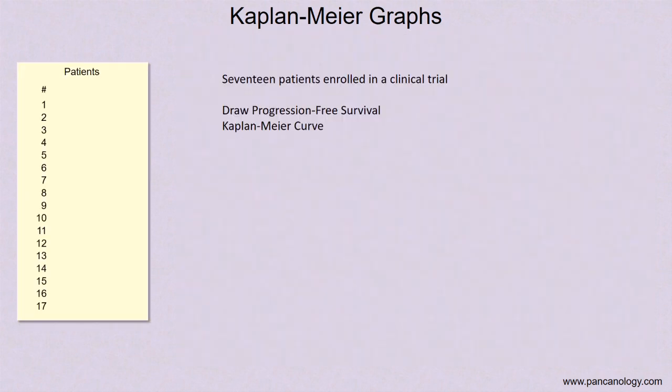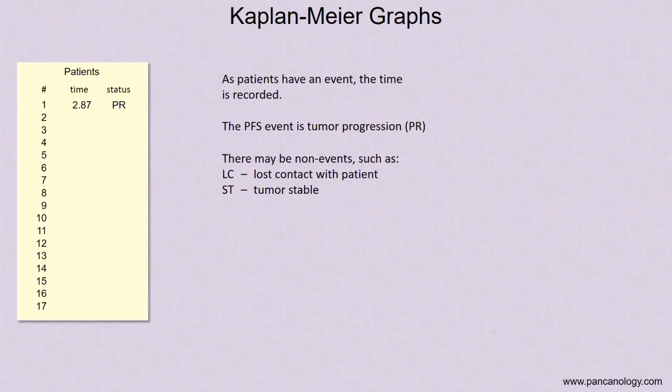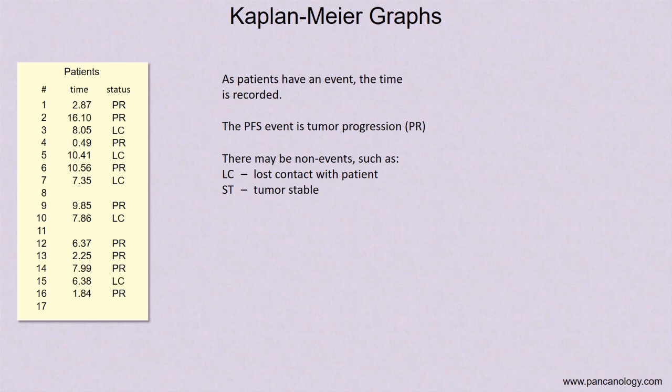The trial we're looking at has 17 patients enrolled. We'll use this table over here to collect the patient data. Here are the 17 patients in order of their accrual. If the tumor grew, the time is recorded and they're given a status of PR. If the researchers lose contact with them, the time of last contact is recorded and they're given a status of LC. If the trial ends with their tumor not growing, the time is recorded and they're given a status of ST.